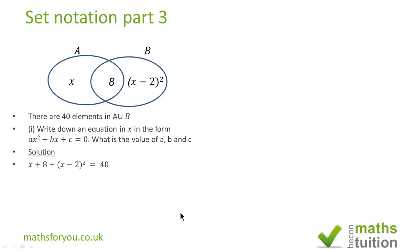The solution would be x + 8 + (x - 2)² = 40 because both sides form A union B. When you expand the bracket we end up with x + 8 + x² - 4x + 4 = 40.